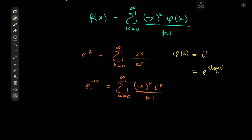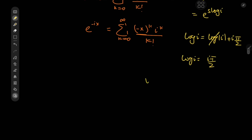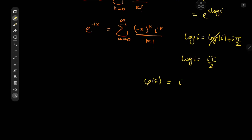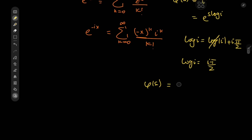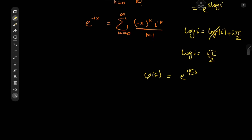What exactly is log(i)? Well, log(i) equals the logarithm of |i| plus i times the principal argument, which is π/2. Since |i| equals 1, log(i) equals iπ/2. So φ(s) equals i^s, which equals e^(iπs/2).